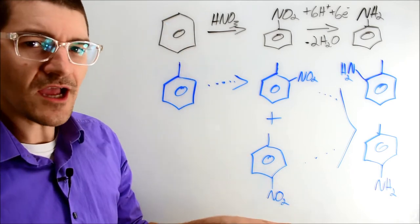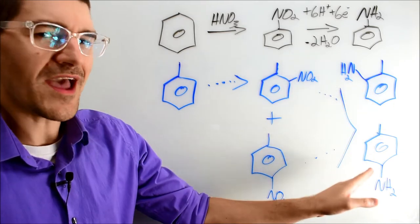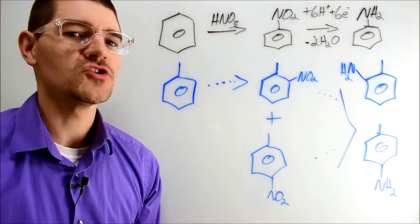At any rate, during the reduction you take your ortho- and para-nitrotoluidines and end up getting, you guessed it, ortho- and para-toluidines.